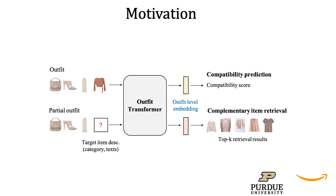Our framework, which we call Outfit Transformer, addresses both these tasks by learning an outfit-level representation for a set of items. Using outfit-level representations can more effectively capture complex feature correlations among multiple items in the outfit, as opposed to considering pairs of items at a time, as done frequently in prior work.